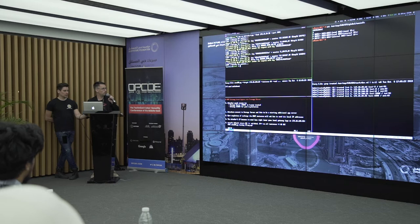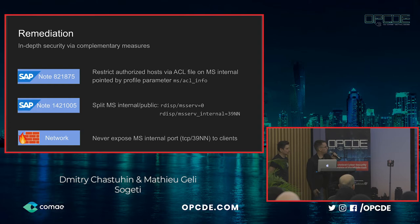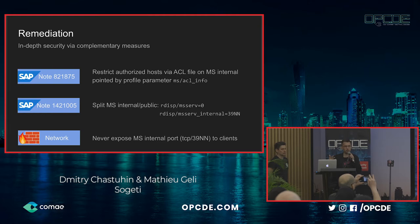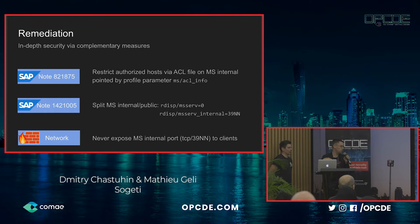For remediation: SAP already has notes with patches and guidelines explaining how to design a proper secure ACL file for the message server, and how to split internal and public ports — which is already done in newer application servers. Additionally, at the network level, firewalls should block access to port 39NN from outside. This should be mandatory.